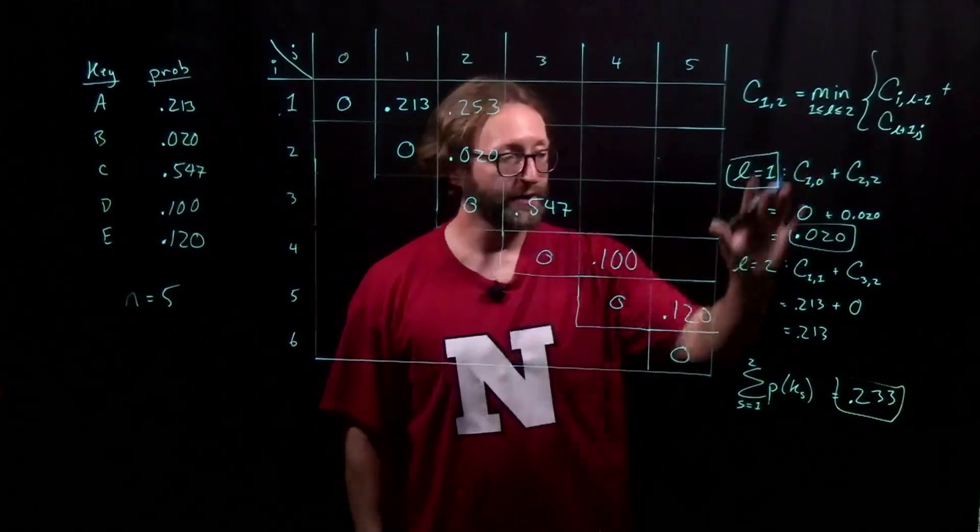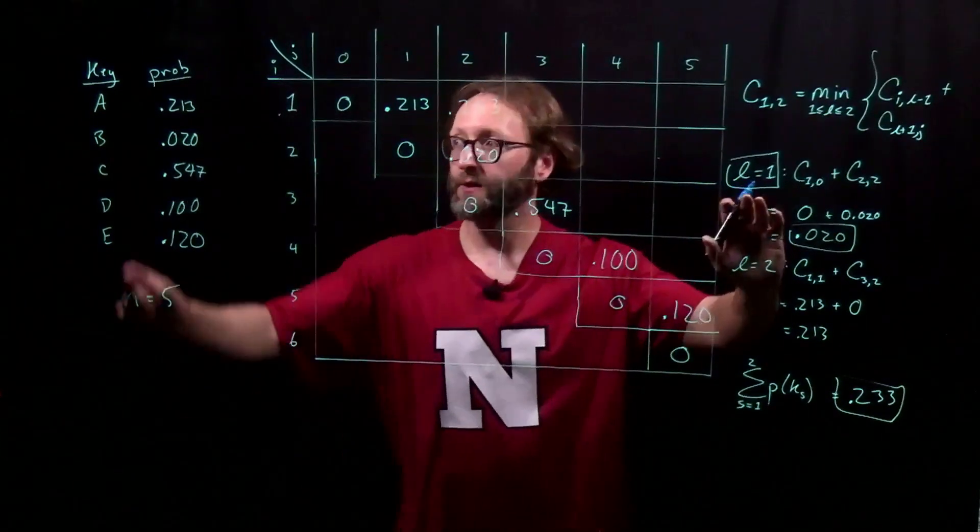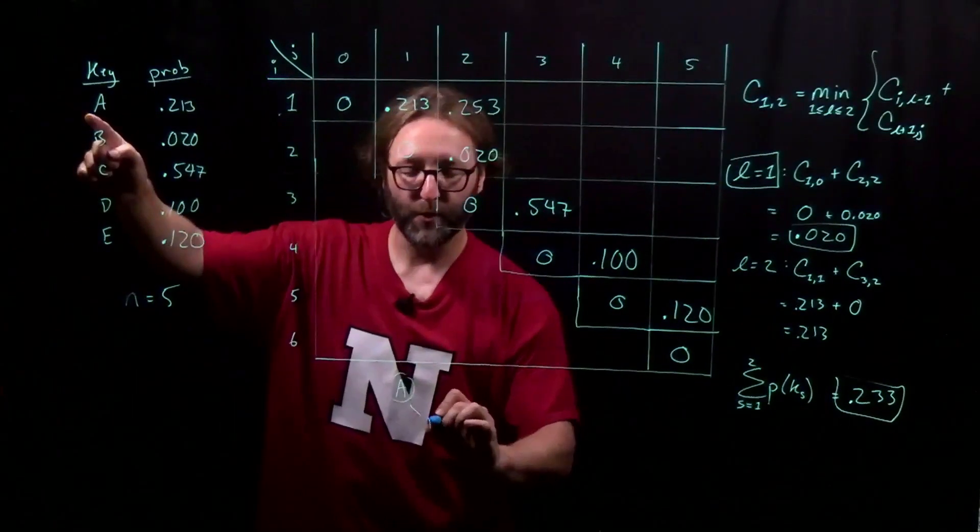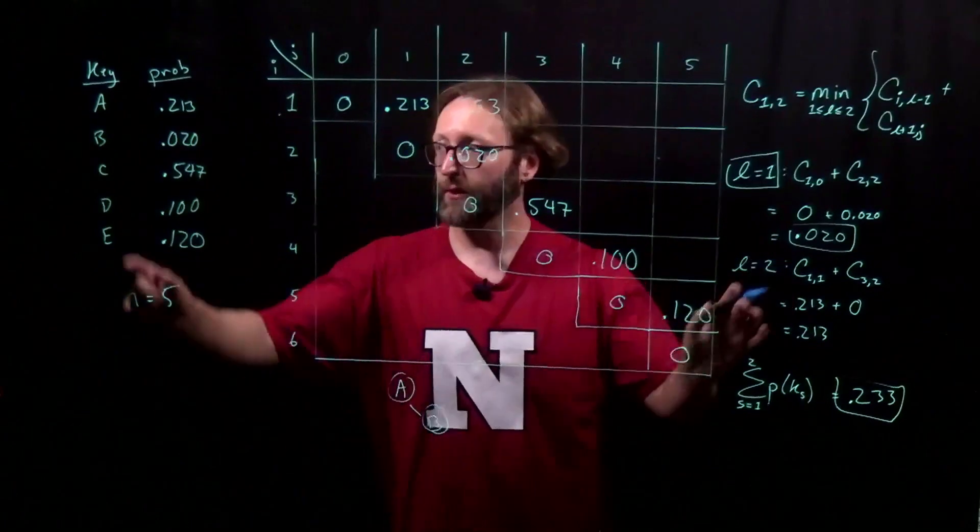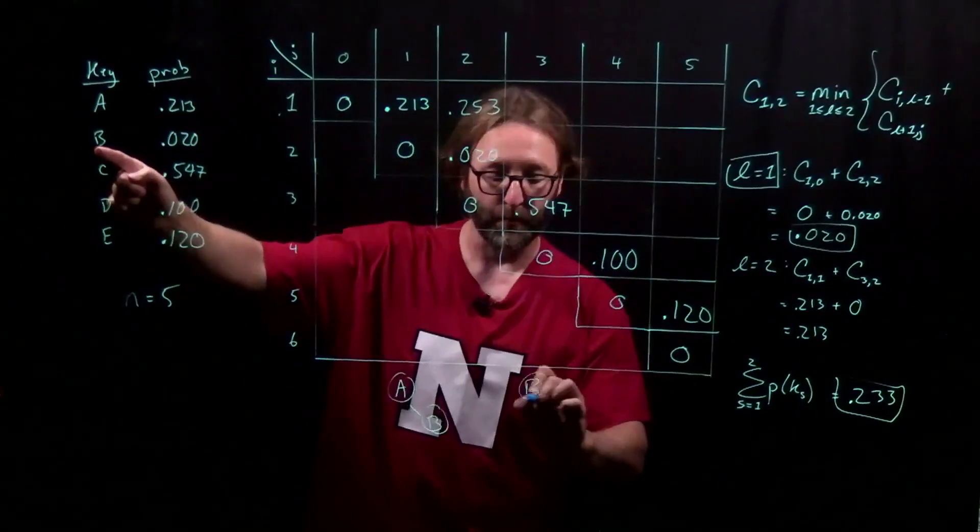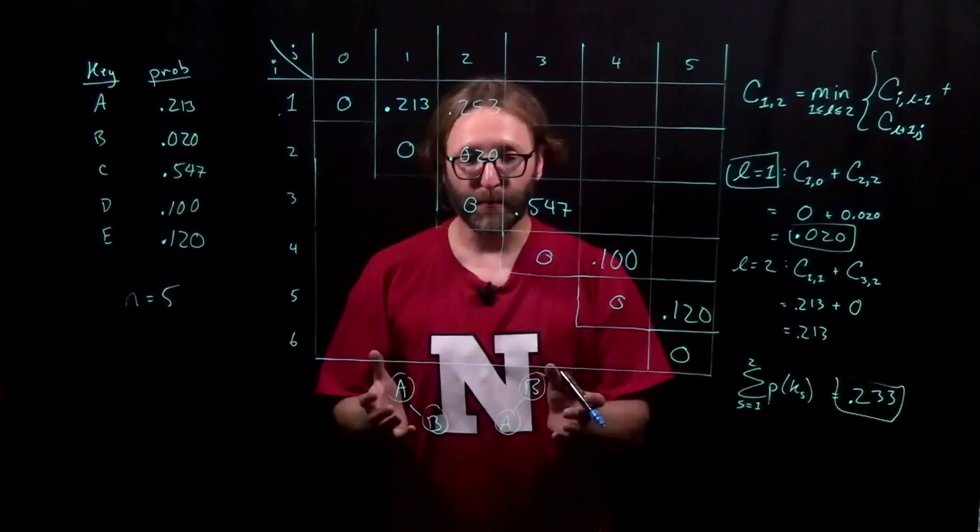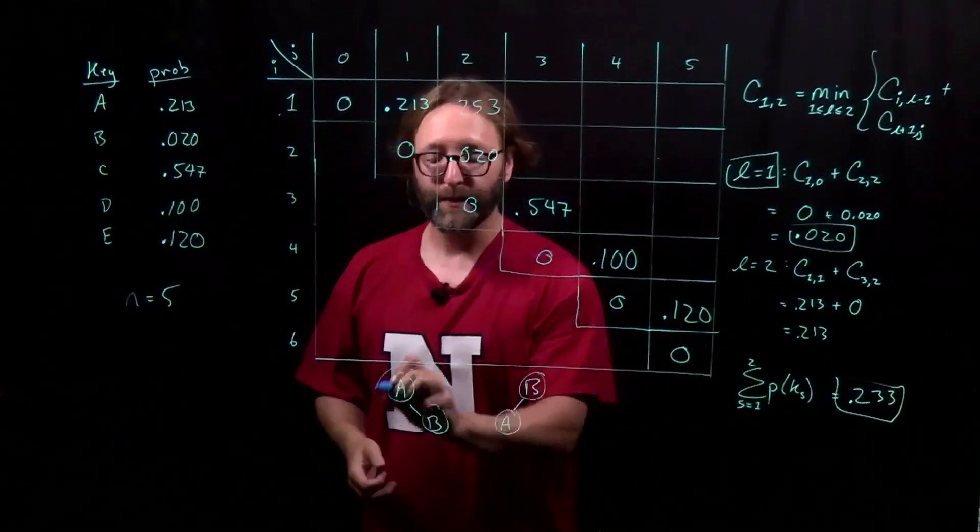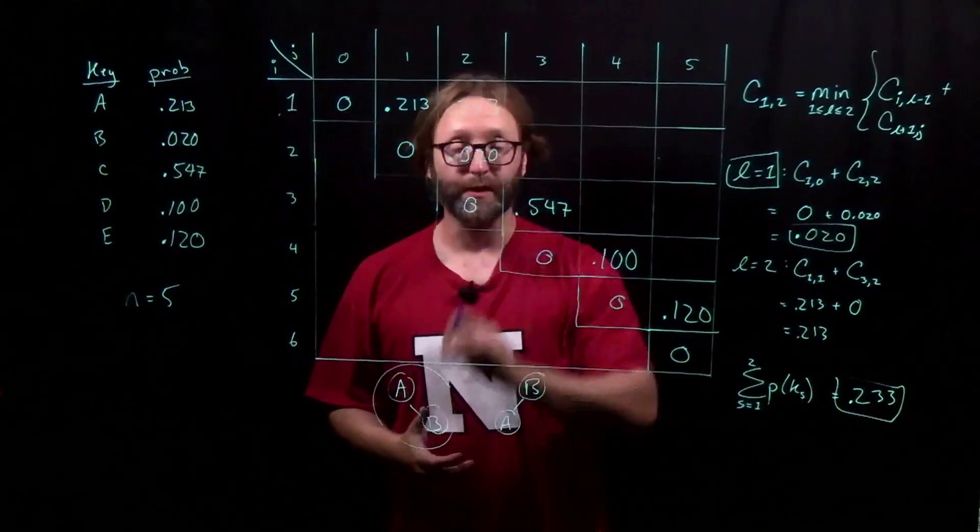Now, before we go on, let's understand these two possibilities. This possibility corresponds to making key A the root, with, of course, key B being the right child. This possibility corresponds to B being the root, with A being the left child. We've considered both of these possibilities. And according to the calculations over here, this one is the better one. And so it gets recorded in our tableau.